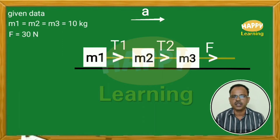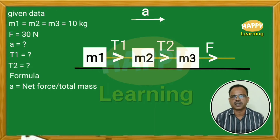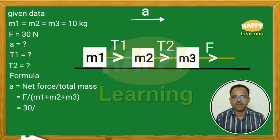We need to find acceleration A, tension T1 between M1 and M2, and tension T2 between M2 and M3. Using Newton's second law: acceleration equals net force by total mass, that is F divided by M1 plus M2 plus M3, which equals 30 divided by 30, that equals 1 meter per second square.